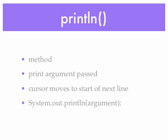The second method is println. It also prints the argument passed, but the cursor moves to the start of the next line after it finishes printing whatever is passed to it as its argument. Call this method with system.out.println, pass an argument within parentheses, and include a semicolon at the end of the line.